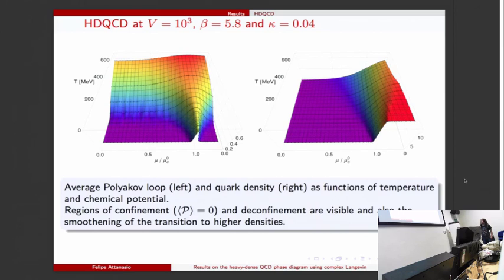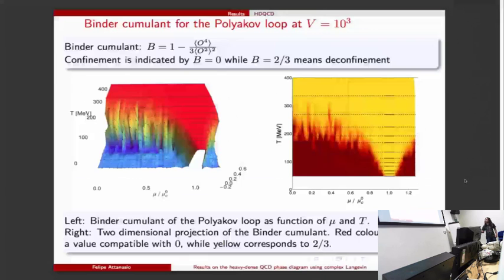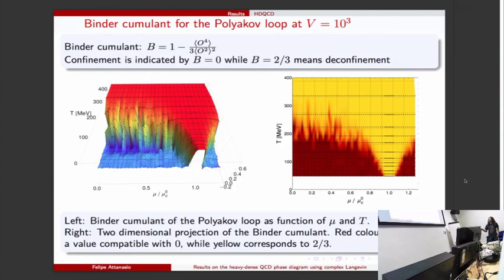But the whole point of this study was to match the boundary between the confined and deconfined phases. To do that we use the Binder cumulant which is defined like this. The two interesting regimes for the Binder cumulant are when B equals zero where we have confinement, and B equals two-thirds which means we have deconfinement. Here is a 3D plot for the Binder cumulant - chemical potential here and temperature - and this is a two-dimensional projection. This boundary here you can see here.